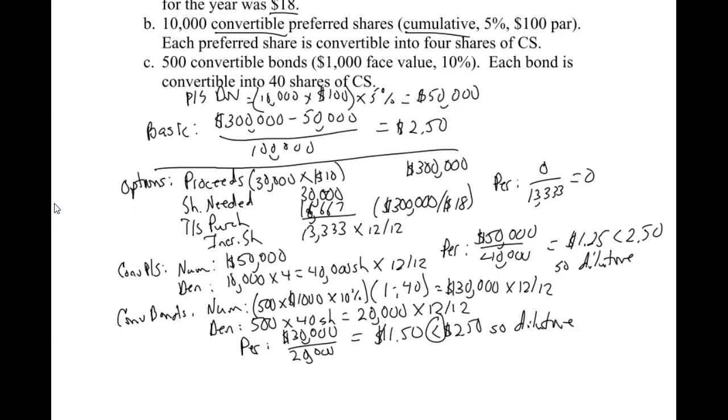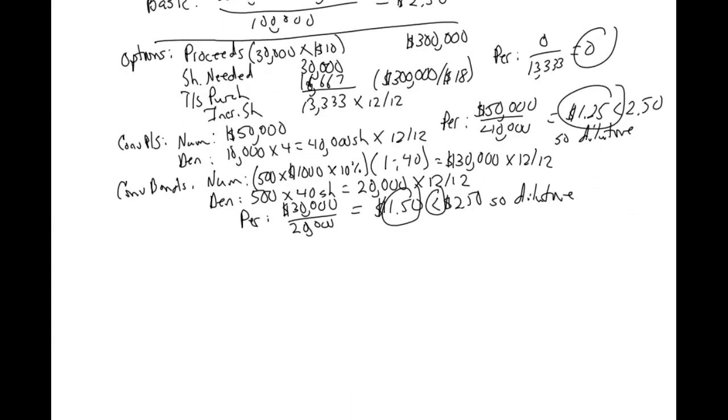Now that we have them all done, now we're going to start putting them into dilutive earnings per share. The way we do that, we put them in by order of their per share effect. So options and warrants are always zero. So they're going to be first. This one's second. It's $1.25. And that one's going to be third because it's $1.50. So we'll put them in that order. And I'll kind of talk about why we do it that way in a minute.